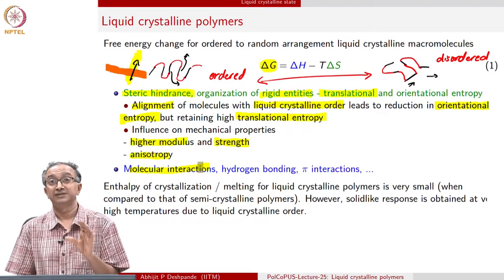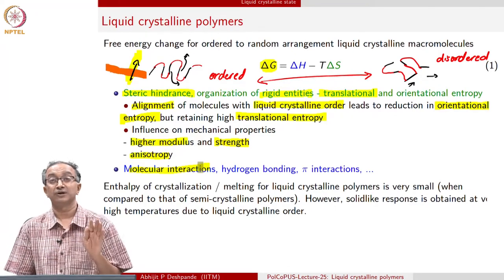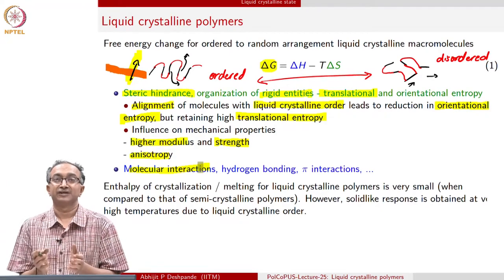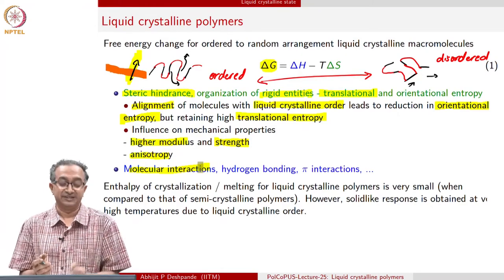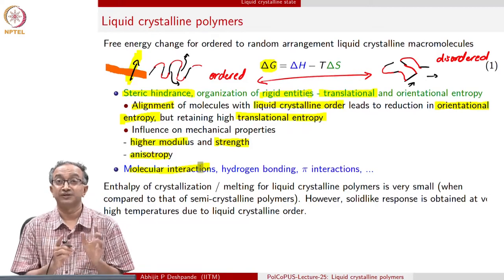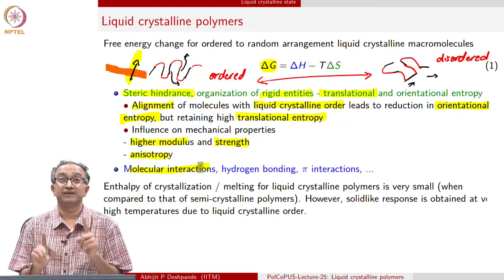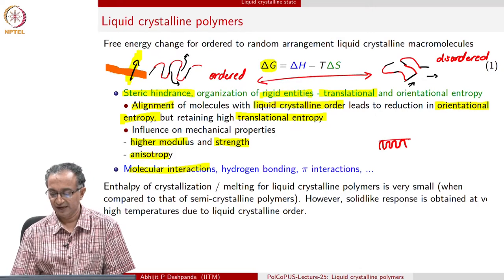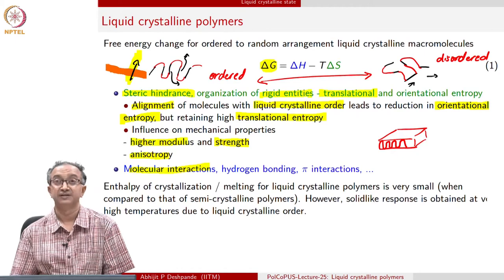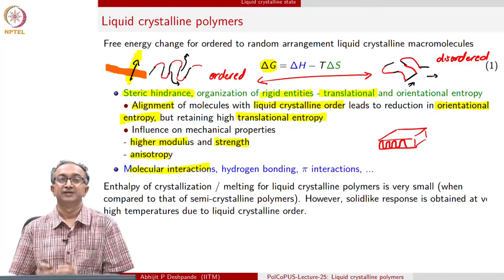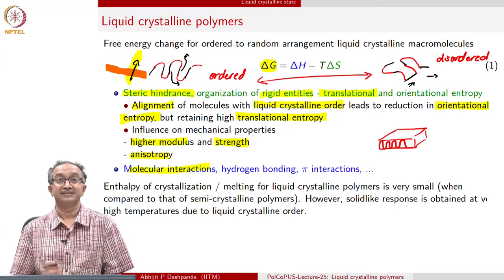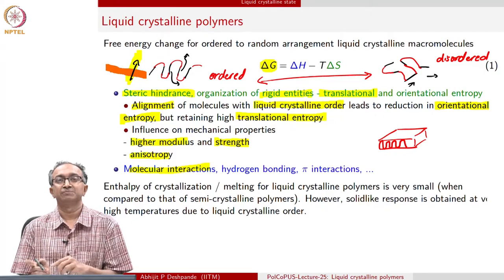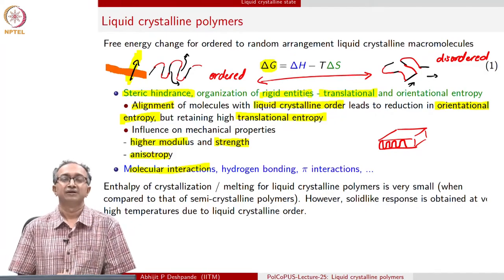The overall Gibbs free energy for whether liquid crystalline order will occur or not depends on both of these factors. However, one thing we need to keep in mind is that the enthalpy of crystallization for the disorder-to-order liquid crystalline system is much less compared to a melt-to-crystalline-order transition that we discussed in lectures 17 and 18 earlier. That is because orientational order only is present; translational entropy is still present, and therefore there is flexibility of molecular motion. While in the case of a crystal, what we saw is there will be a folded chain crystal where only vibrations around mean positions are permitted - a perfectly solid-like material. So the overall energy change when going from random to liquid crystalline order is much less compared to the melt-to-crystal transition.